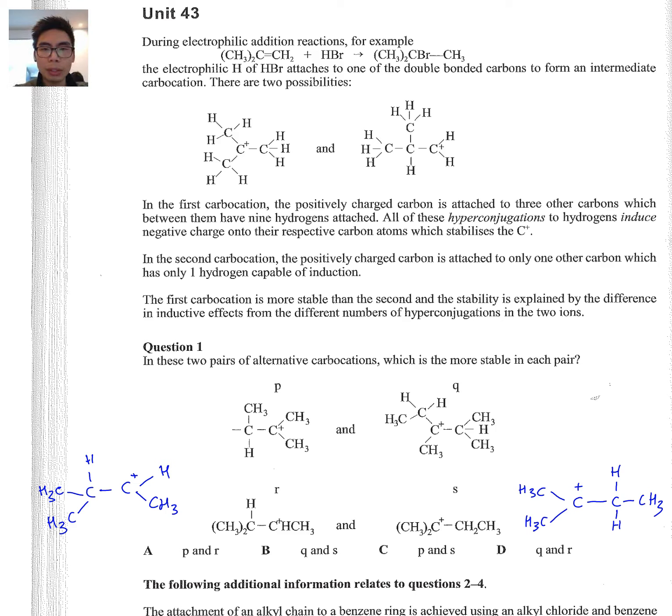If we go to question one, now just at a glance this does look like an organic chemistry question, but in actual fact it's just following a pattern or a bunch of rules. In these two pairs of alternative carbocations, which is the most stable in each pair? So essentially what they're asking is if we were to compare P and Q, and we were to compare R and S, of those two, which one is more stable? Which is the most stable out of P and Q, which is more stable out of R and S?